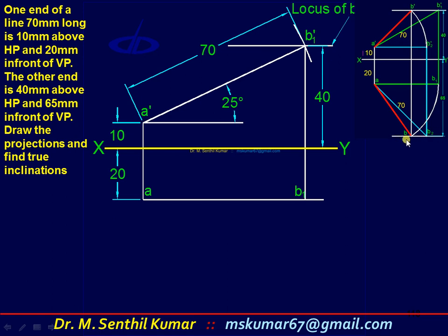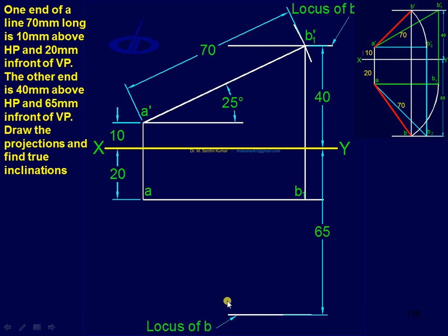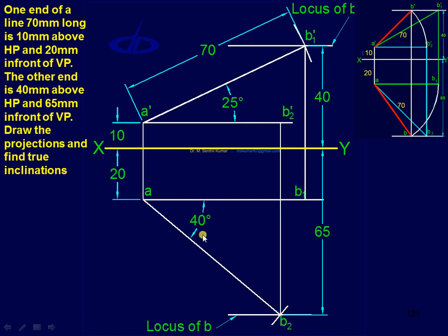For the preliminary top view set: the other end locus in top view is 65 in front, or 65 below XY — draw that locus first. Then with 70mm radius, cut the arc to get B2. The compass is already set at 70; with A as center, cut the arc to get the preliminary top view. Measure its angle — that is phi — and complete the preliminary top view set.